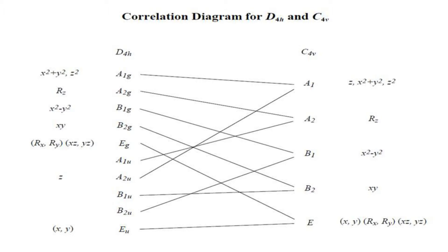Not only are Mulliken notations correlated, but the Mulliken notations which resemble symmetry functions are also merging. For example, A1g and A2u are the two irreducible representations in D4h that correlate to A1 in C4v. A1g resembles x²+y² and z², while A2u resembles z. So all three — x²+y², z², and z — belong to or resemble A1, meaning the symmetry functions attached to the Mulliken notations are also correlated.